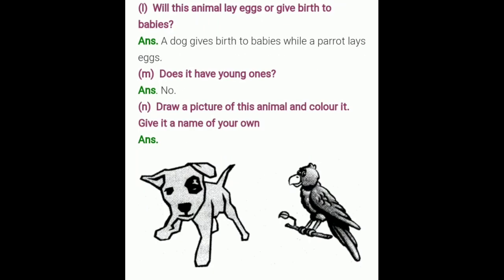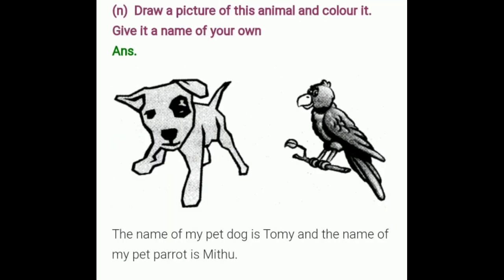Will this animal lay eggs or give birth to babies? Answer: a dog gives birth to babies while a parrot lays eggs. Does it have young ones? Answer: no. Draw a picture of this animal and color it. Give it a name of your own. The name of my pet dog is Tommy and the name of my pet parrot is Mithu — you can write about your own pet animal here.